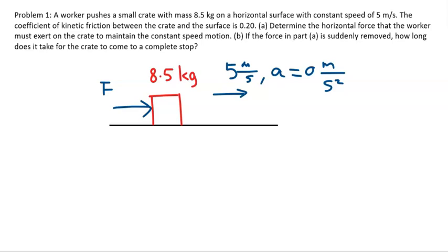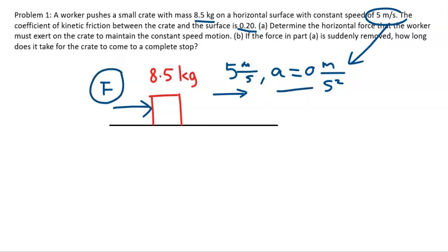Problem 1. A worker pushes a small crate with mass 8.5 kilograms on a horizontal surface with a constant speed of 5 meters per second — so that means the acceleration is 0. The coefficient of kinetic friction is 0.2. We want to determine the force F that the worker must exert on the crate to maintain constant speed motion, so what is F when acceleration is 0?